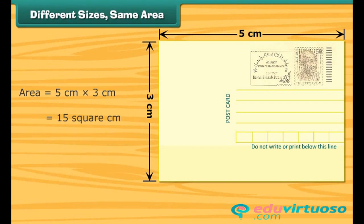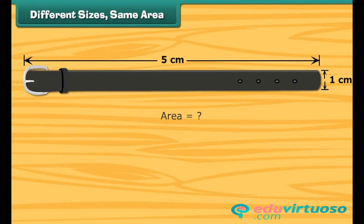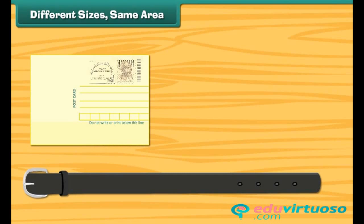Look at this postcard. Its area is equal to 15 square cm. What about the area of this belt? It is also 15 square cm. Both postcard and belt are of same area, but their sizes are different. What about their perimeters?